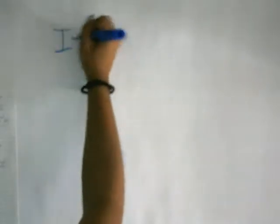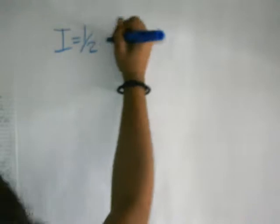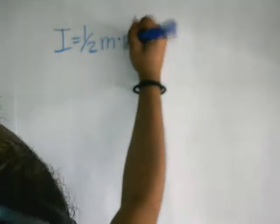Because we're dealing with a disc, we are going to use the equation: inertia is equal to half mass times radius squared.